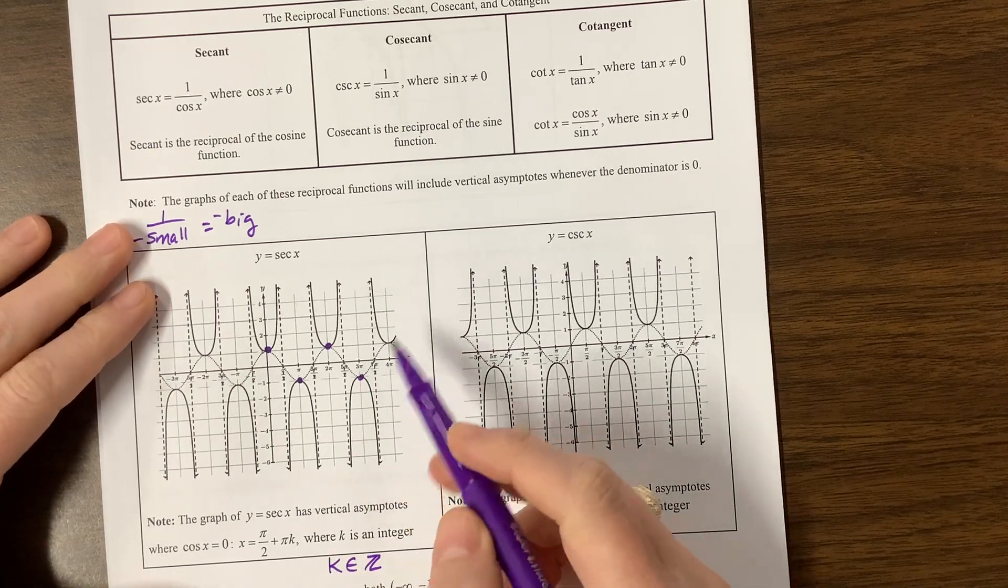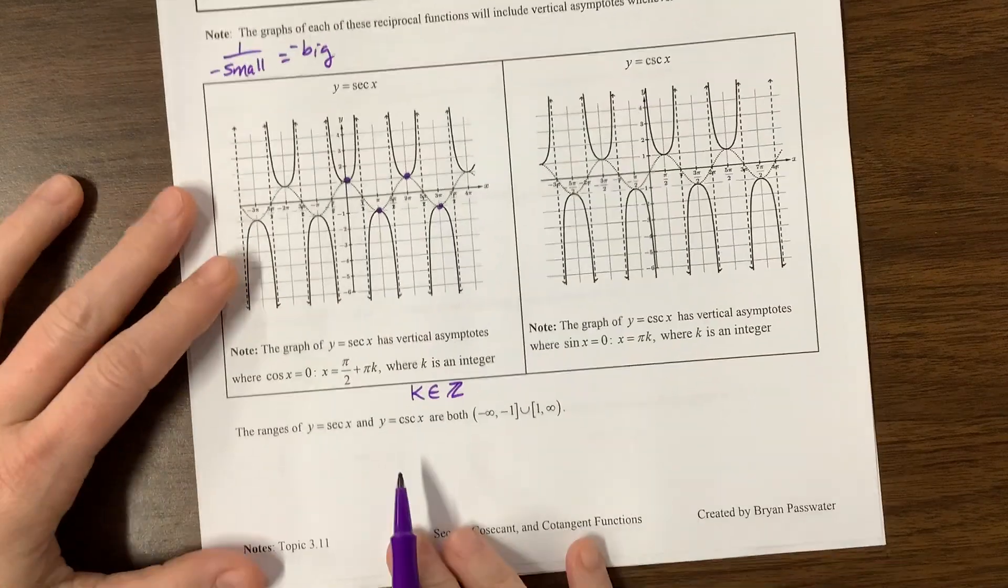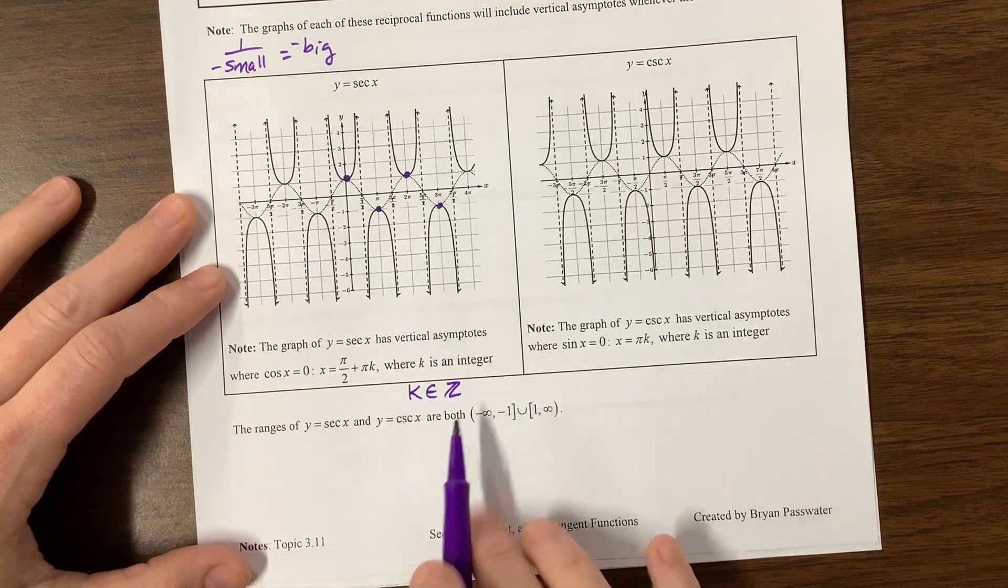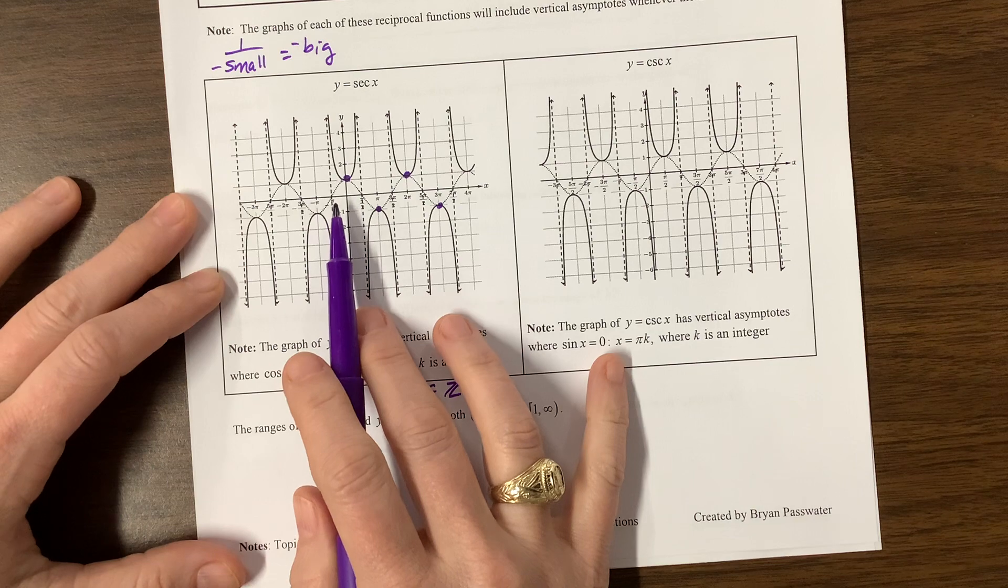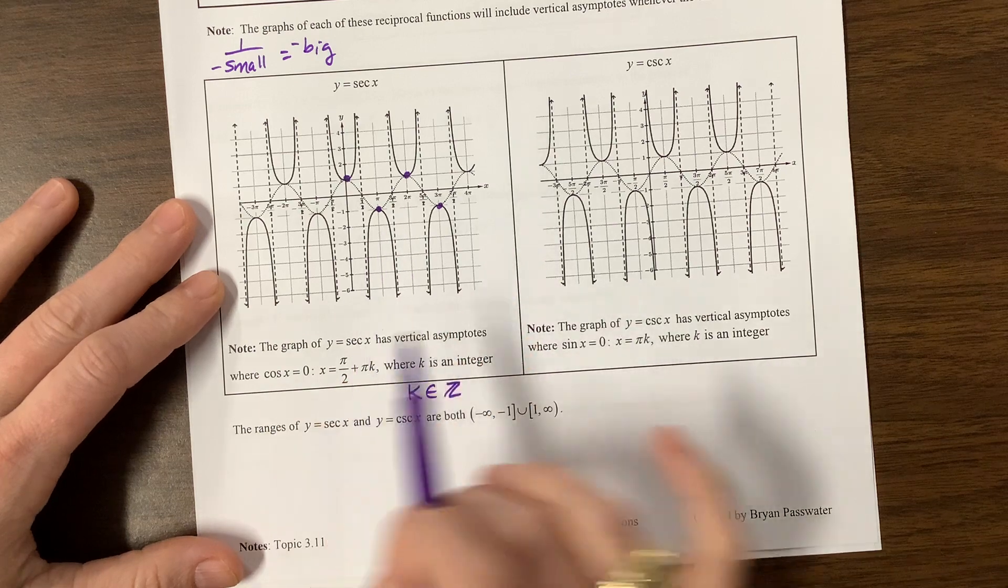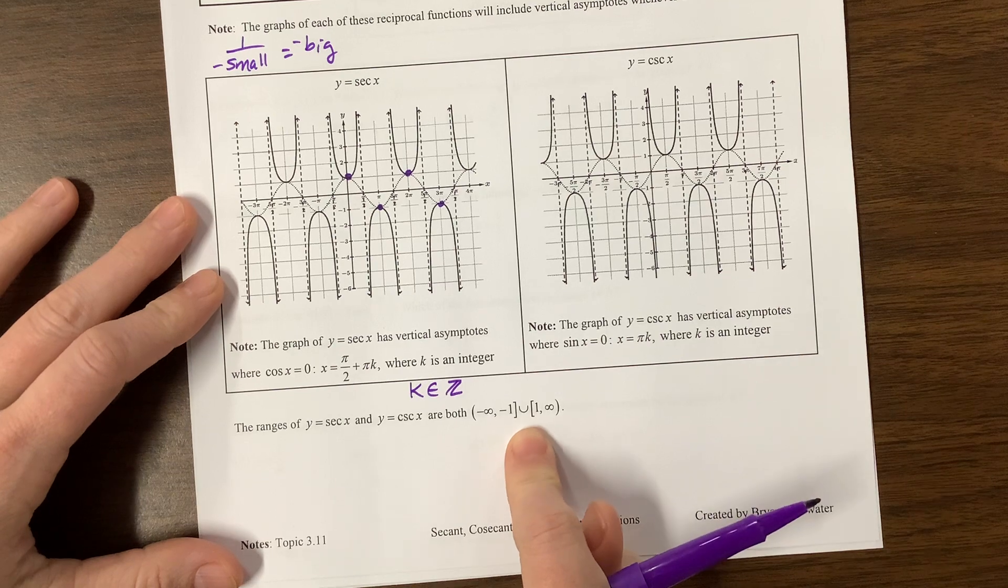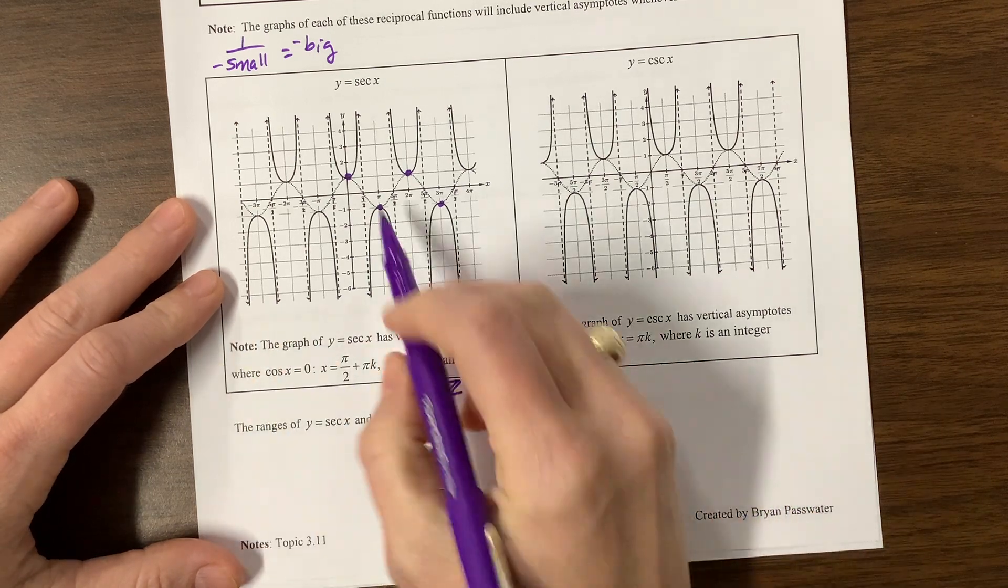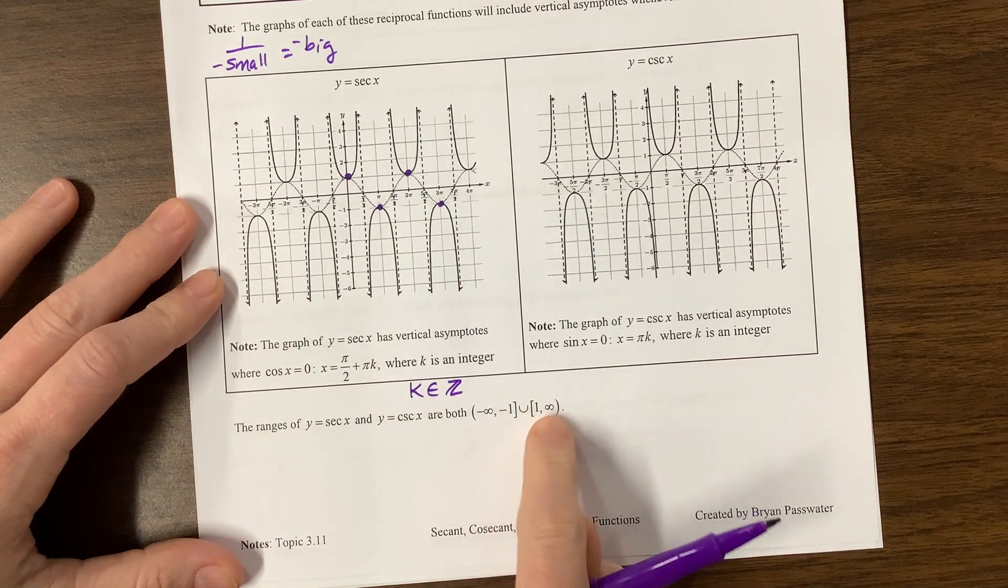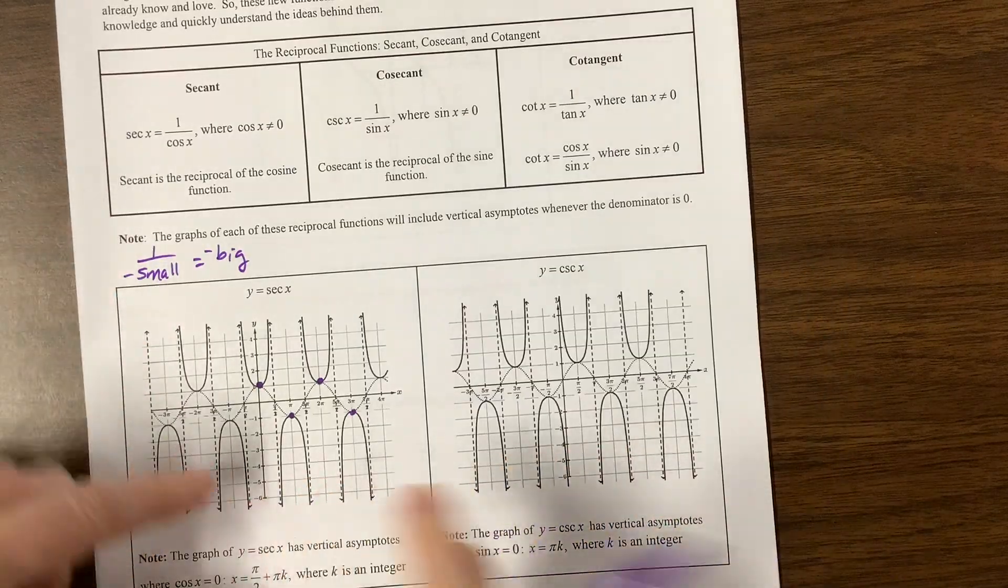I also use the reference of 'mind the gap,' because secant and cosecant, the range goes from negative infinity to negative one, and then we have a gap. I'm pretty sure that's what the tube says in London. I am going to England over spring break, so I will get to find out for sure. I've joked about the secant and cosecant functions, you have to mind the gap for many years. Then it picks up again from one and goes to infinity. It's a hard bracket on negative one and positive one, because it does include those points.